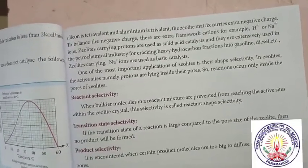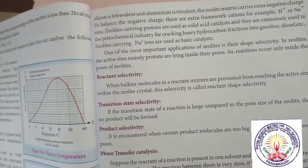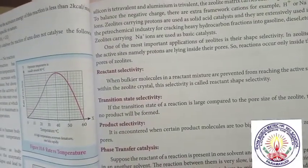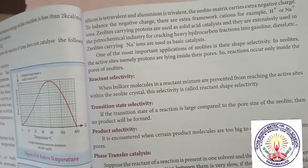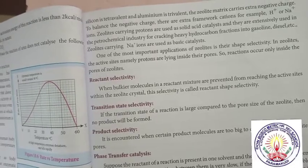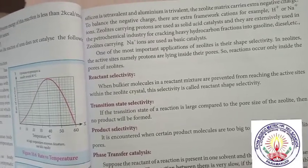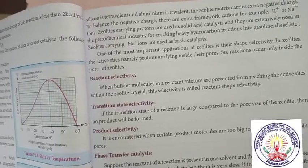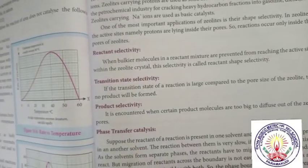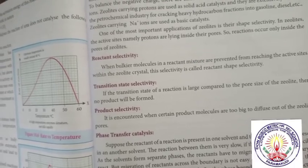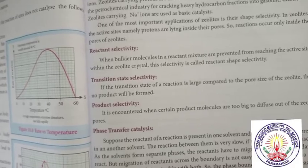Reactant selectivity: when bulkier molecules in a reactant mixture are prevented from reaching the active sites within the zeolite crystal, this selectivity is called reactant shape selectivity. Transition state selectivity: if the transition state of a reaction is large compared to the pore size of the zeolite, then no product will be formed.